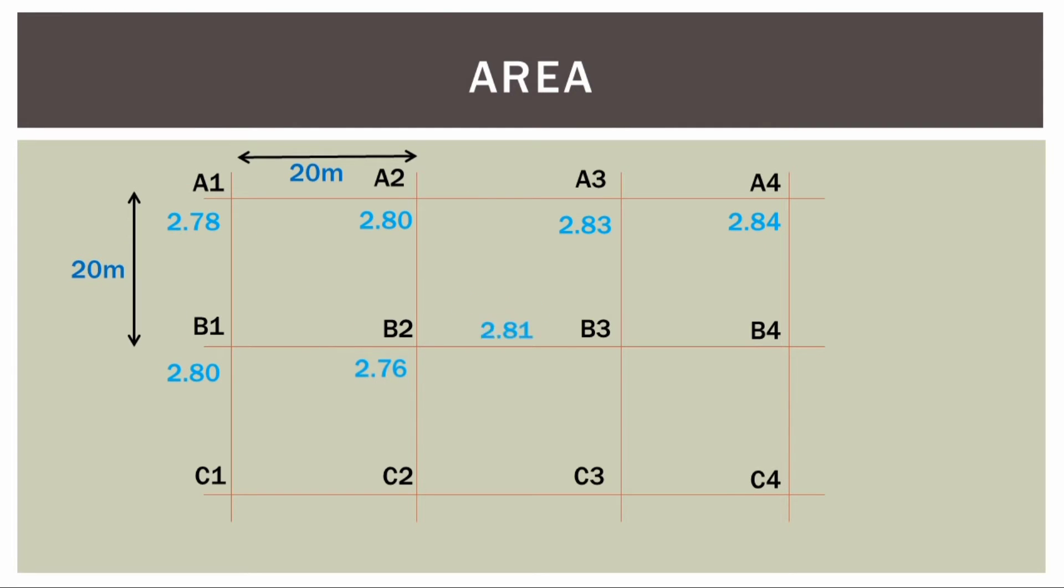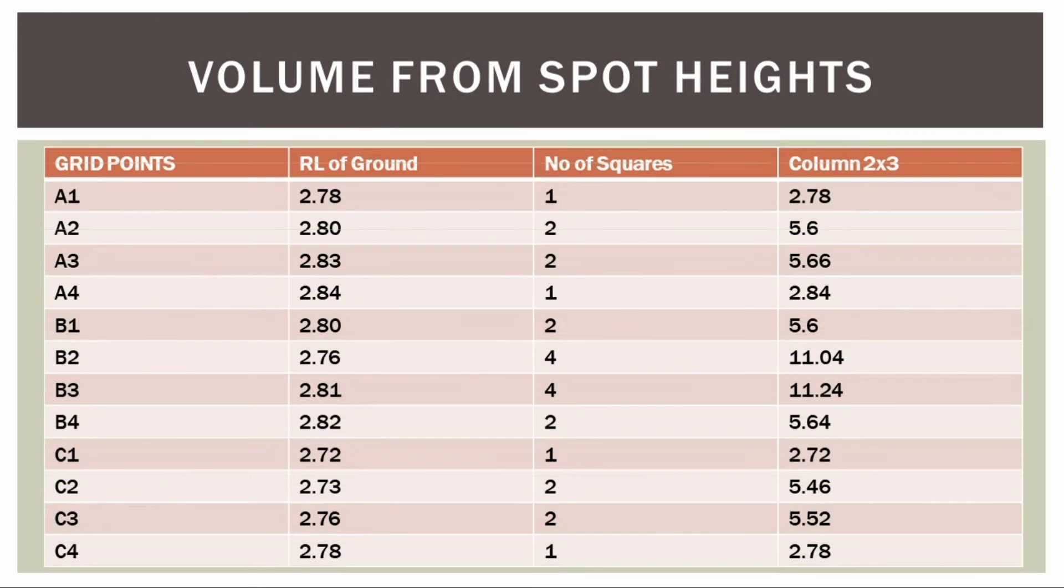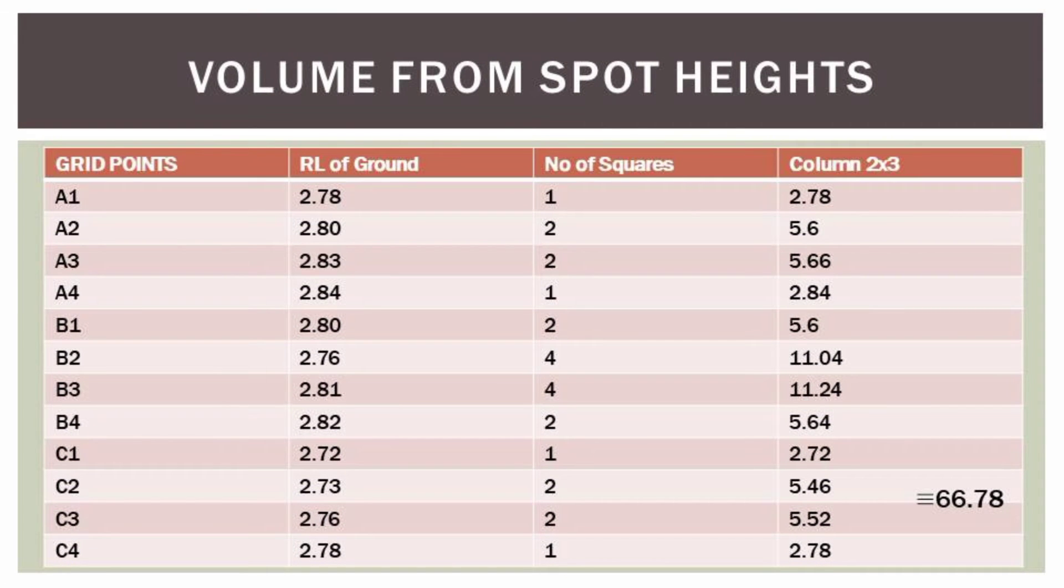Having labeled the grid points, now we can transfer the information to the table. The table consists of four columns: the grid points, reduced level of the ground, number of squares, and lastly the timesing column.